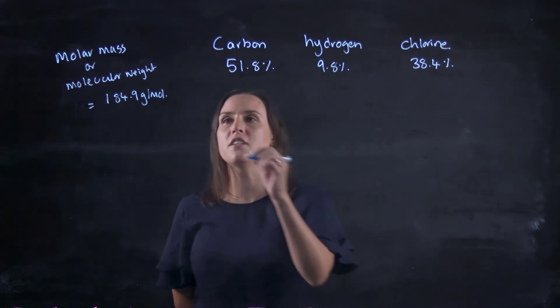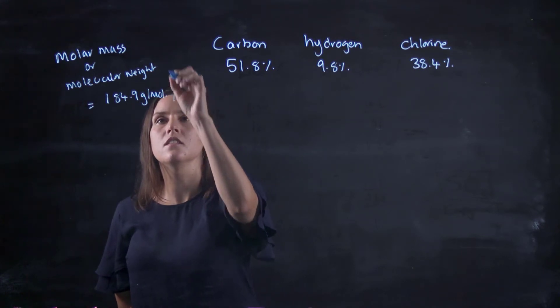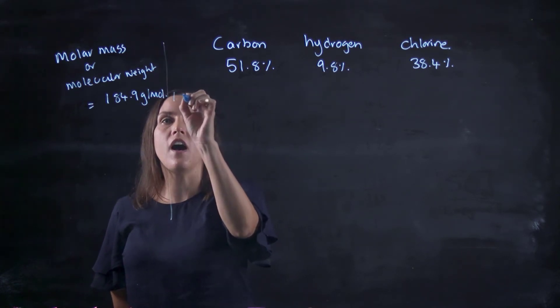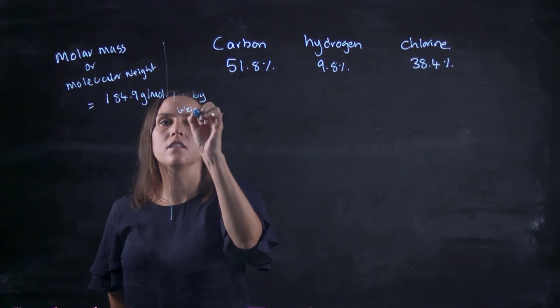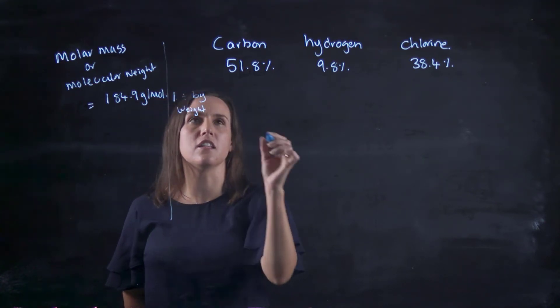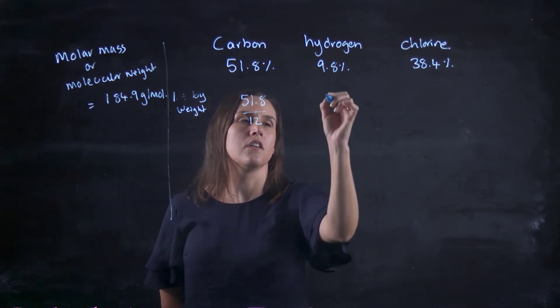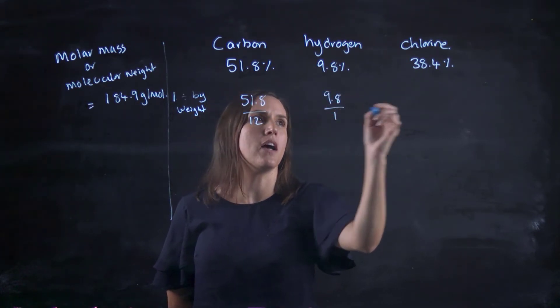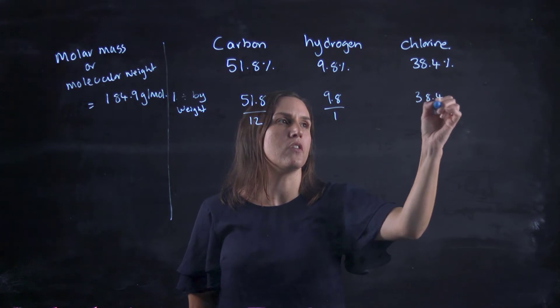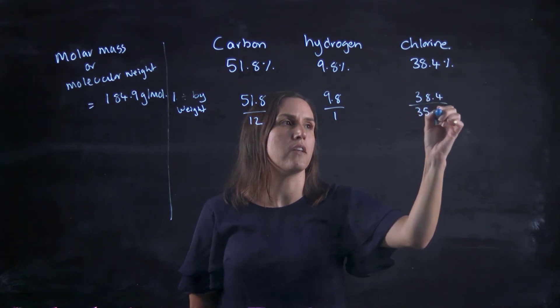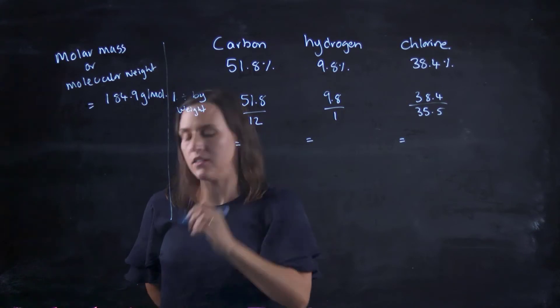So remember, the first step is to divide by weight. The atomic weight, so 51.8 divided by 12, 9.8 divided by 1, 38.4 divided by 35.5 and write down those values.